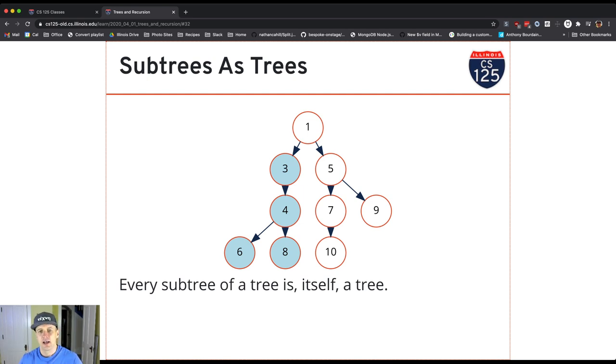The node four as a direct child, and then four has two children: eight as its right child and six as its left child. I can continue the same thing.